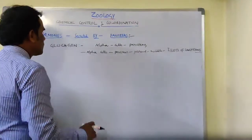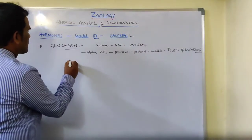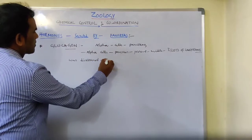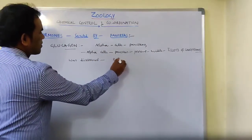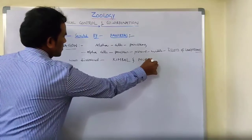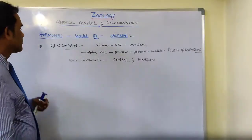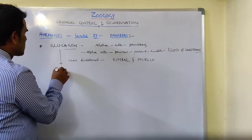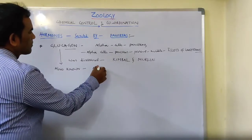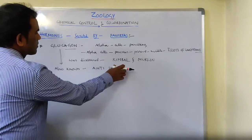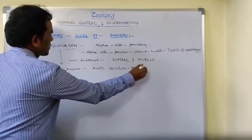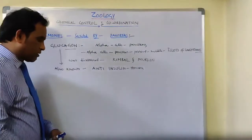This glucagon was discovered by Kimball and Merlin. Glucagon is also commonly known as the anti-insulin hormone.